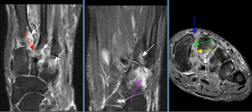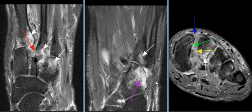Osseous edema is seen at the base of the metatarsals and distal margin of the cuneiform bones, coupled with trabecular microfractures. A subchondral plate fracture is seen at the distal cuboid bone with reactive edema.